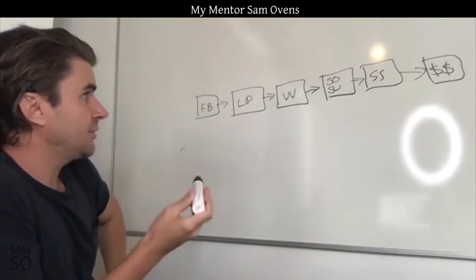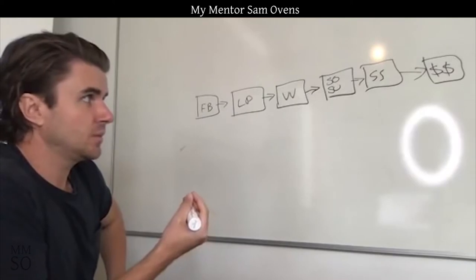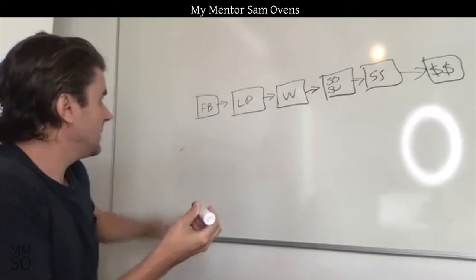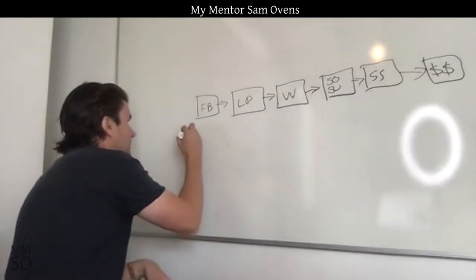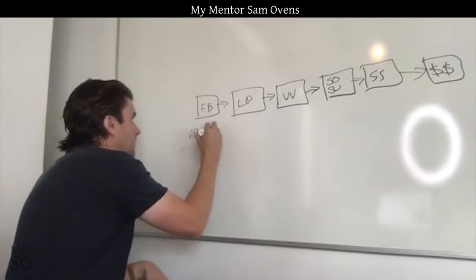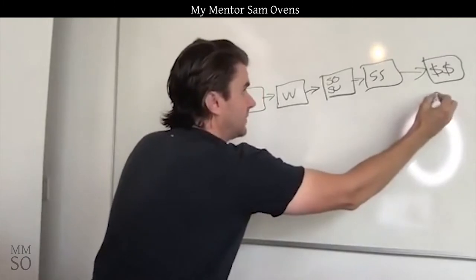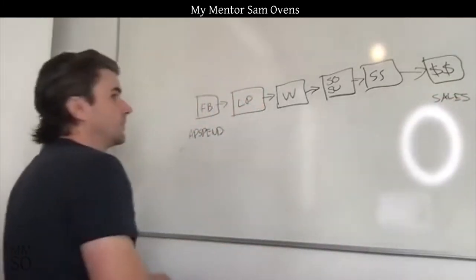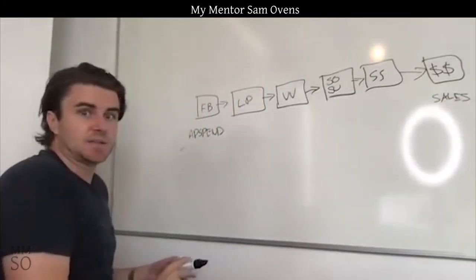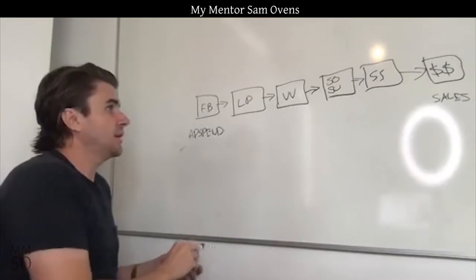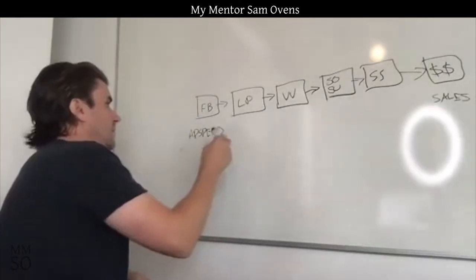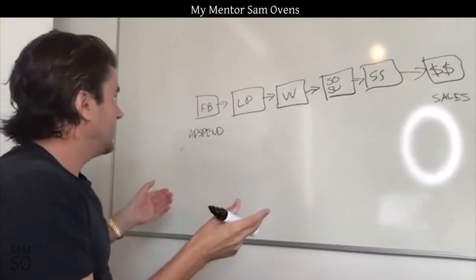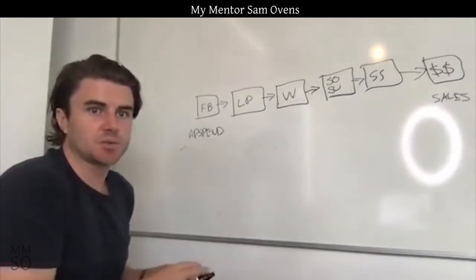So what we want to do is figure out if it's working. How do we define success with this process? We've got the total amount spent on ads, and then we've got the total amount received in sales. What we're basically trying to do is see if the total amount from sales, minus ad spend, gives us a surplus or a deficit.